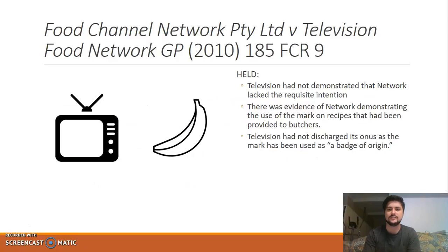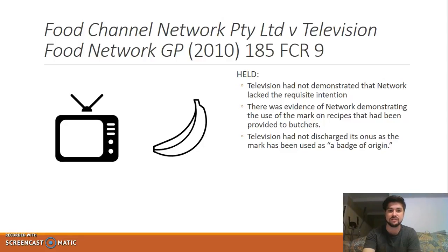The court found that Television had not demonstrated that Network lacked the requisite intention. Network had produced some evidence that they had used the trademark on recipes which they had given to butchers, and by doing so they demonstrated that they had used the trademark as a badge of origin. Therefore, Television had not discharged its onus in proving a lack of intention.